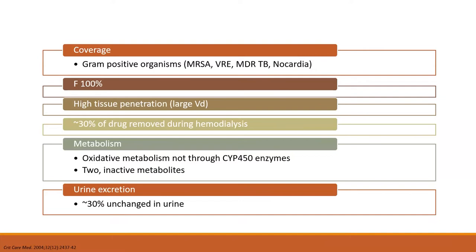Let's first start with a little background on linezolid and why we're talking about this today. Linezolid is used primarily to treat pneumonia as well as skin and soft tissue infections caused by gram-positive organisms. It does have susceptibility against common multi-drug resistant pathogens, including MRSA, VRE, tuberculosis, and Nocardia. It has 100% bioavailability with high tissue penetration and a volume of distribution around 40 to 50 liters, as well as excellent penetration into the CSF. It is removed both by hemodialysis and by the kidneys, both at about 30%, and it does not undergo any CYP enzyme metabolism. However, it is affected to some degree by P-glycoproteins.